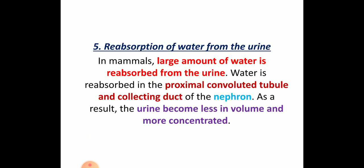Next, reabsorption of water from the urine. In mammals, a large amount of water is reabsorbed from the urine. In the PCT — proximal convoluted tubule — and the collecting duct of the nephron, the urine becomes less in volume and more concentrated. You can write these types of techniques to describe the osmoregulation of mammals, whether the example given is the desert kangaroo rat or camel.